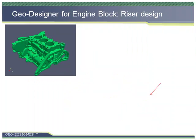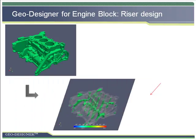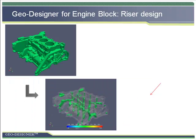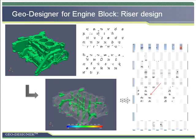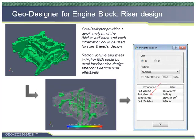Then we can make the MDI analysis. The result is clear. The region with higher MDI will cause shrinkage porosity if the metal shrinkage was not solved during the casting process. So we need to put some risers above it to compensate the metal shrinkage.